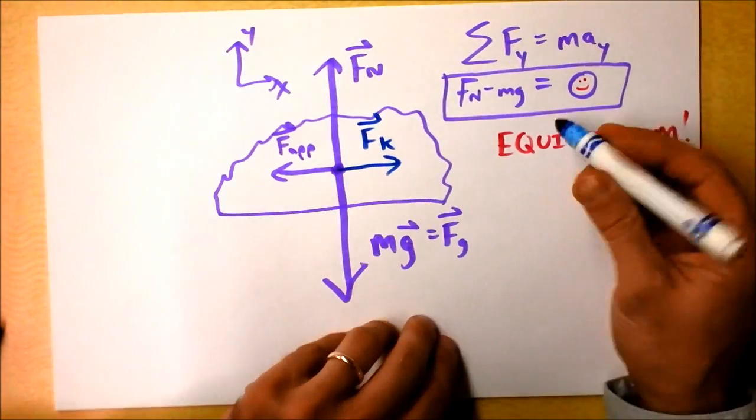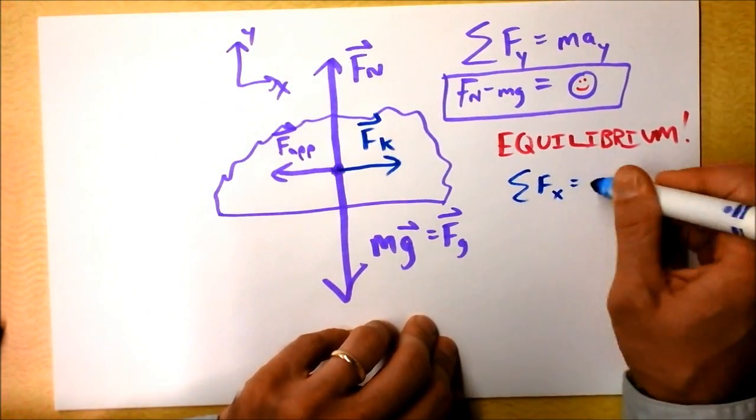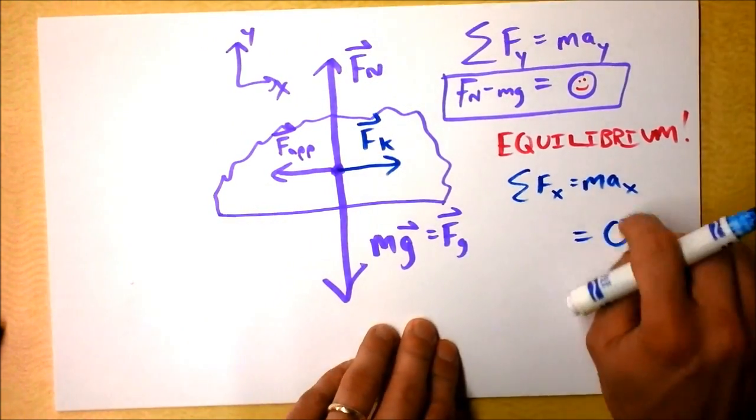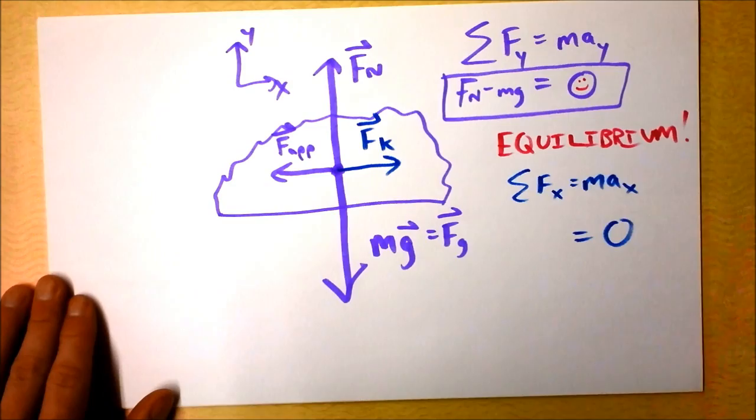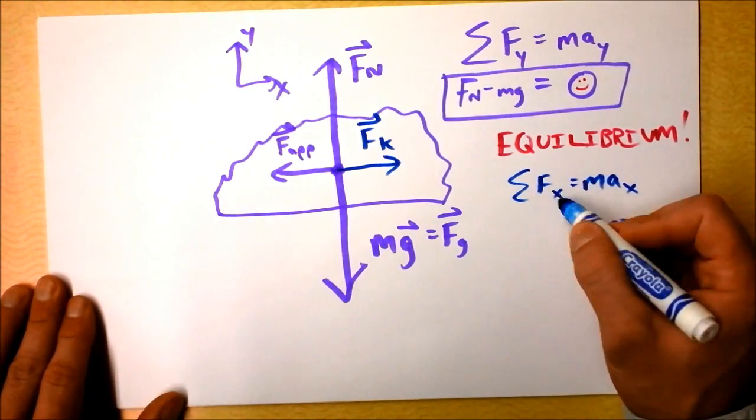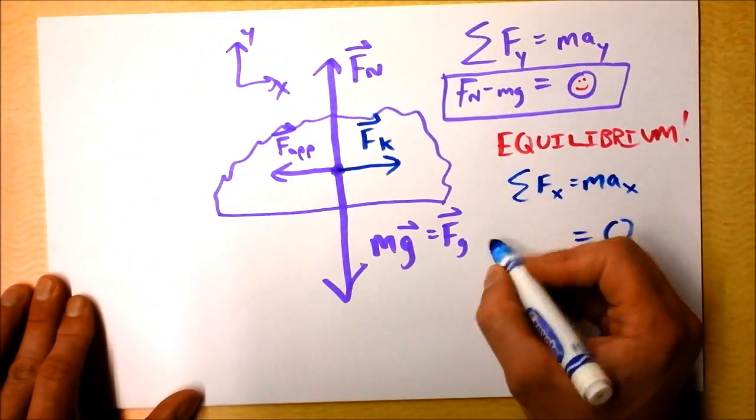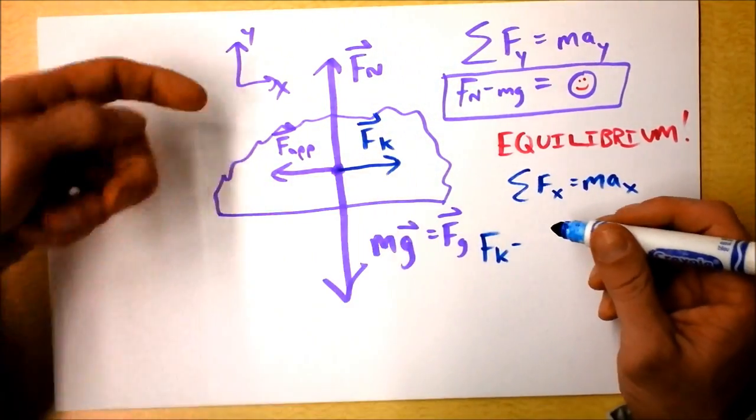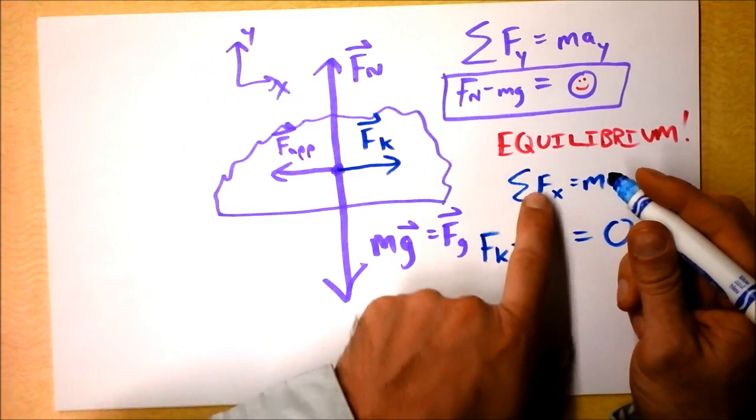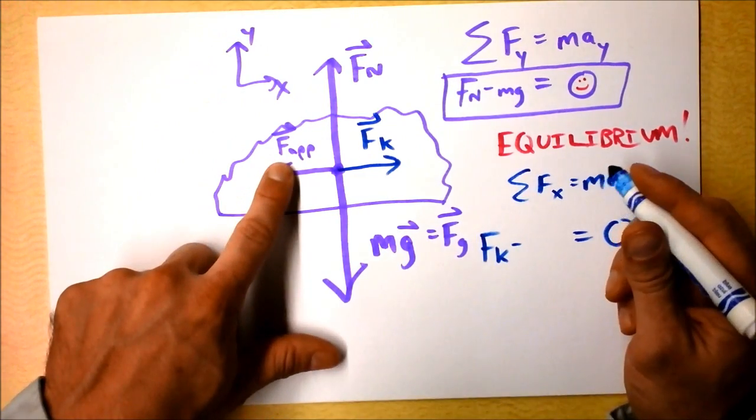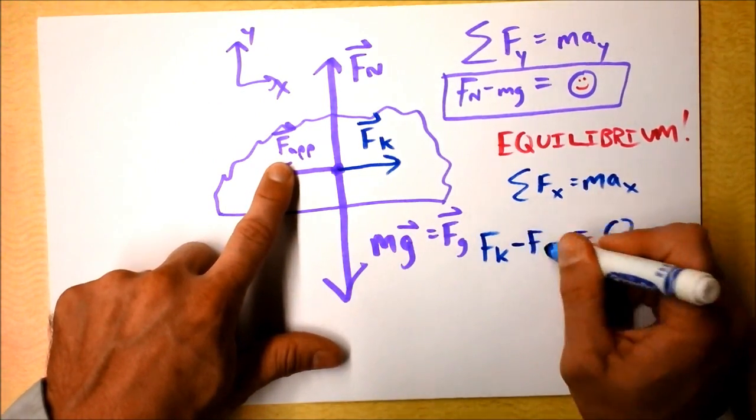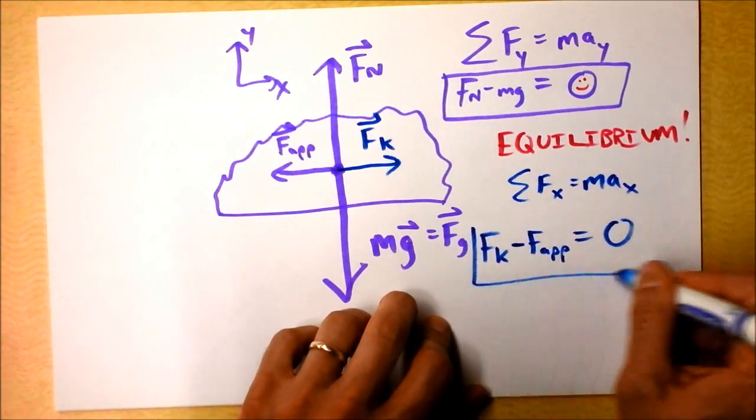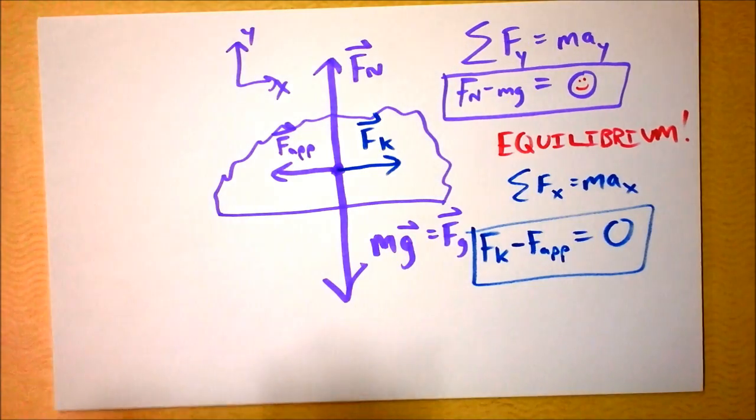So here's my statement of net force in the x direction, mass times acceleration in the x direction. And I declare that the acceleration in the x direction is zero. And I notice that there are two forces in the x direction. One of them is positive. That's the force of kinetic friction. So I write Fk here. And the applied force is to the left. So I have to subtract the strength of the applied force.